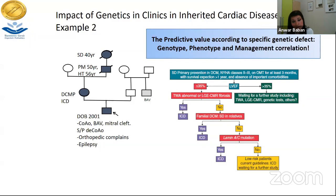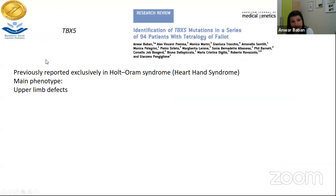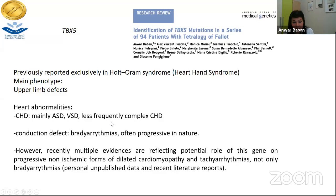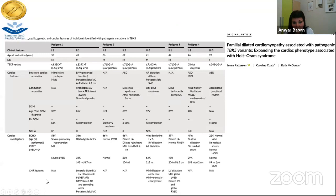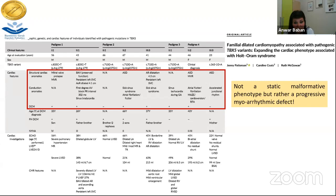Another example of a condition with mixed phenotypes with congenital heart defects involves TBX5 mutations. Previously this gene was reported to cause Holt-Oram syndrome — upper limb defects, congenital heart defects mainly septal defects, complex heart defects, and conduction defects including bradyarrhythmias. However recently there are multiple evidences reflecting a potential role of this gene in dilated cardiomyopathies and tachyarrhythmias, not only bradyarrhythmias. When we see patients with a genetic condition caused by specific genes, we must take into account the progressive nature of these diseases — it's a dynamic, not static condition.